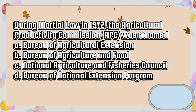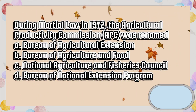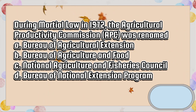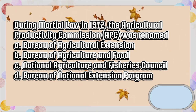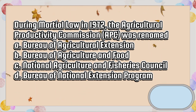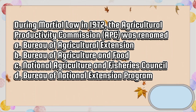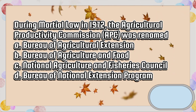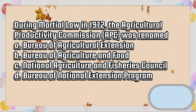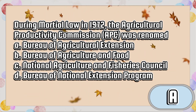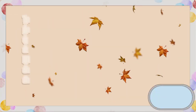During martial law in 1972, the Agricultural Productivity Commissioner (APC) was renamed: A. Bureau of Agricultural Extension, B. Bureau of Agriculture and Food, C. National Agriculture and Fisheries Council, D. Bureau of National Extension Program. The answer is letter A.